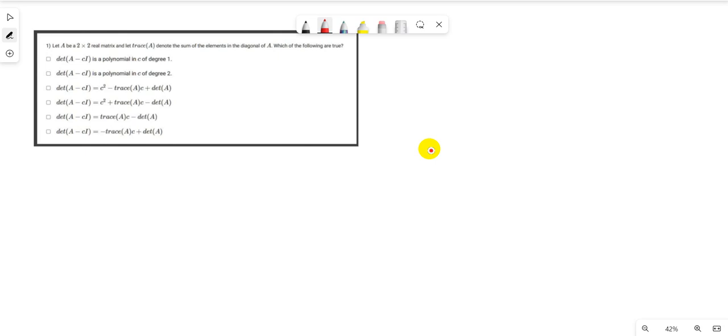Real matrix A with entries p, q, r, s. This is the 2×2 real matrix A. Now trace(A) is the sum of the elements in the diagonal of A, that means p plus s. And det(A) = ps - qr.